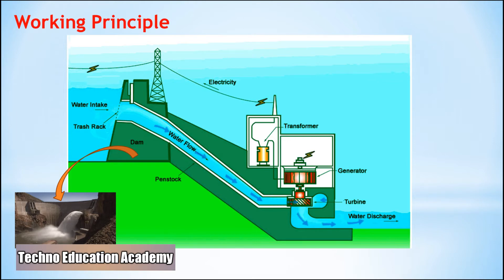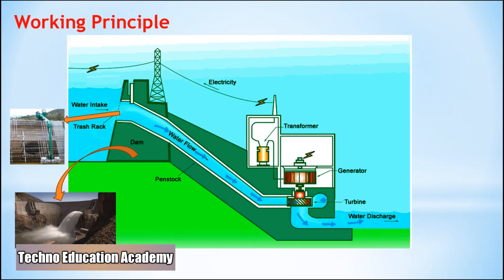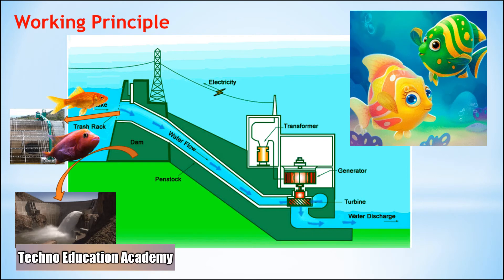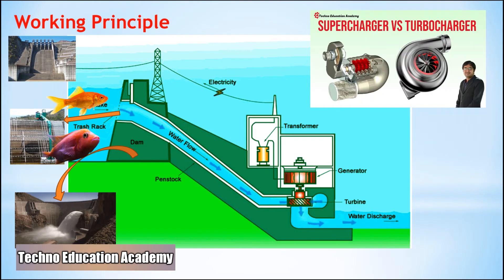The next component is the trash rack. Trash racks are installed in the intake system of the hydropower plant to prevent the entrance of large debris, which can damage turbine parts and cause serious problems in the plant's operation. Another main purpose of the trash rack is to prevent fish species from entering the intake system.